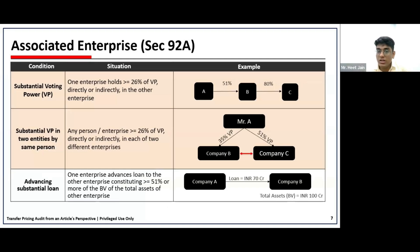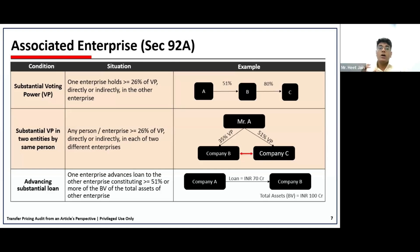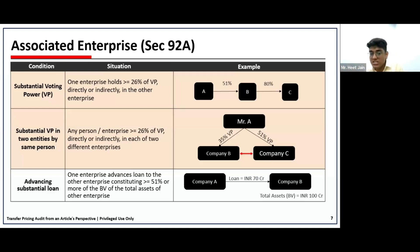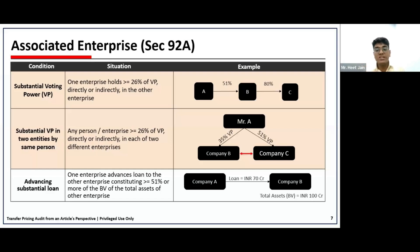The first clause is substantial voting power: where any entity holds 26% or more voting shares in the other entity directly or indirectly. So if A holds 51% in B and B holds more than 26% in C, A and B are associated enterprises, B and C are associated enterprises, and A and C also become associated enterprises because effectively the stake exceeds 26%. The second condition covers where a single entity holds more than 26% in two entities — making those two entities associated enterprises.